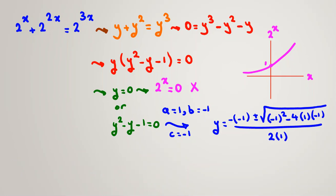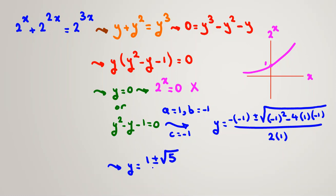Simplifying: y equals 1 plus or minus the square root of 1 plus 4, all over 2, which gives y equals 1 plus or minus the square root of 5, all over 2. Since 2 to the x is always positive, y equals 2 to the x must be positive.